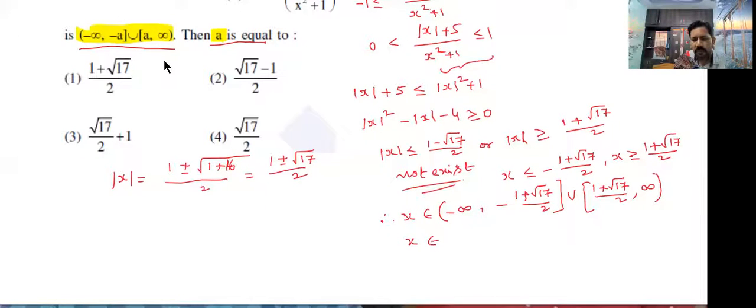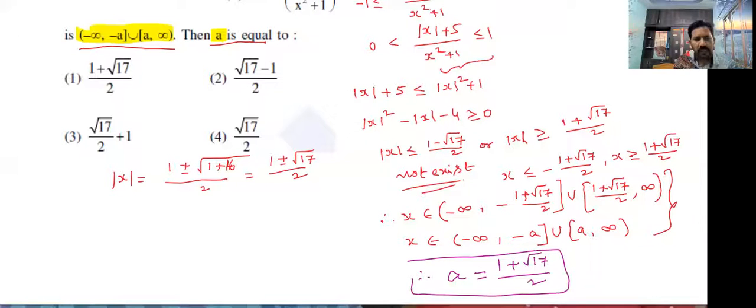In the question what they are given, x belongs to minus infinite comma minus A closed union closed A comma infinite given. These two compare, finally you will get after comparison, what is a value, one plus root 17 by two. This is the answer which option correct, first option correct.